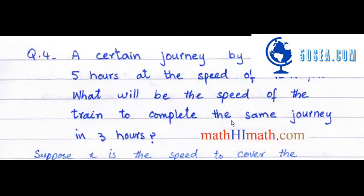It's me Seyyid Mohamad Aswanaza from Mathymath.com. Let's start with question number 4 of exercise number 1.5. The statement of the question is a certain journey by train takes 5 hours at a speed of 45 km per hour.